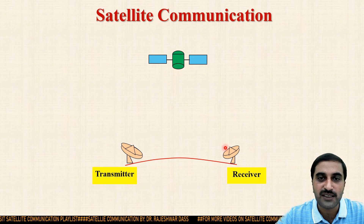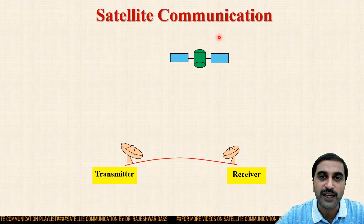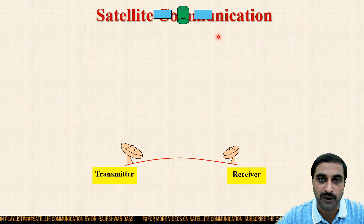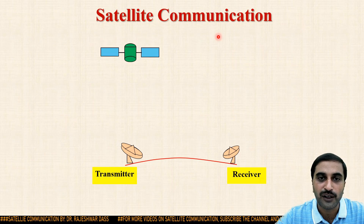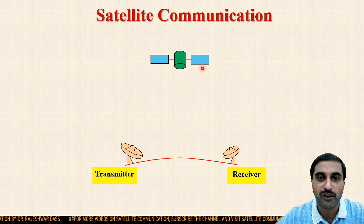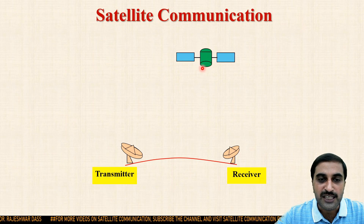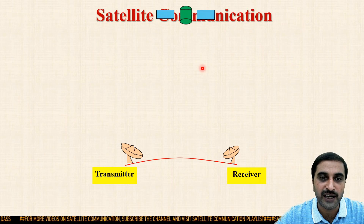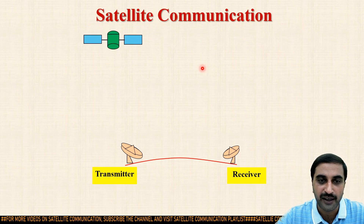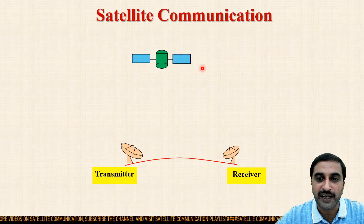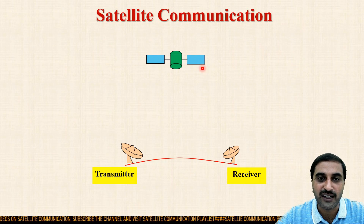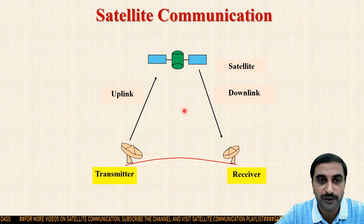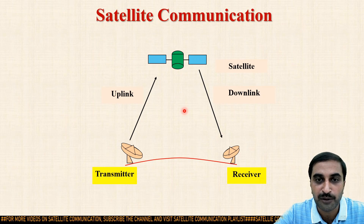This transmitter transmits the signal towards the satellite. The satellite rotates in a particular path in space, which is basically known as the orbit. In the next video we will see the different types of orbits, but here we will discuss the basic block diagram of satellite communication. This transmitting earth station antenna transmits the signal towards the satellite by using a link called the uplink, and the link between the satellite and the receiving earth station antenna is known as the downlink. In the previous class we have seen that various bands are available for uplink and downlink purposes.